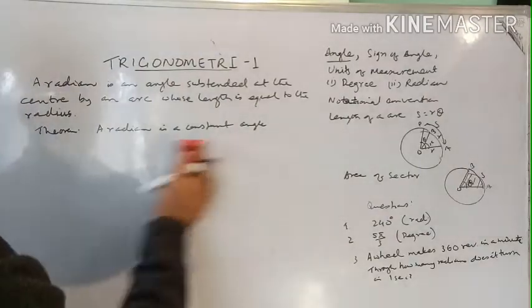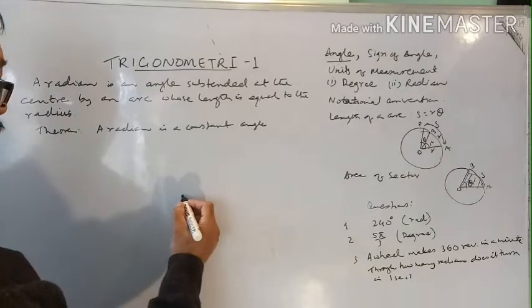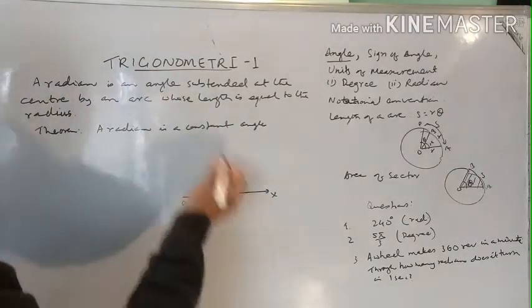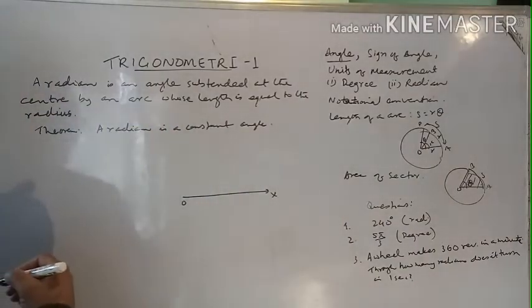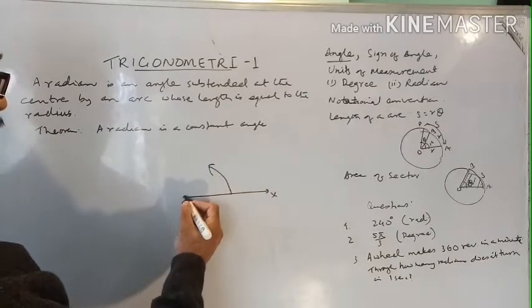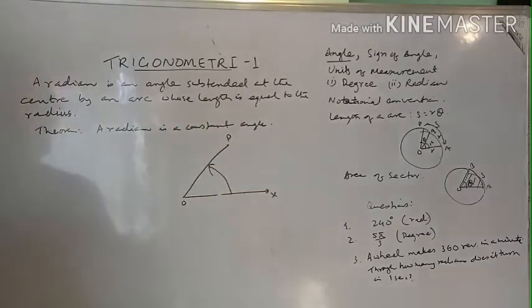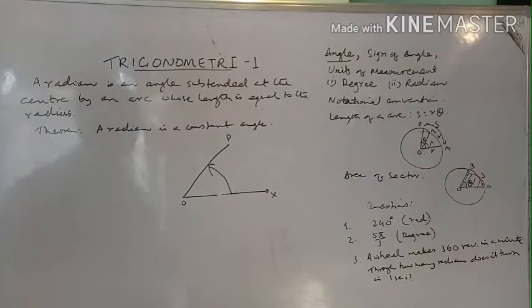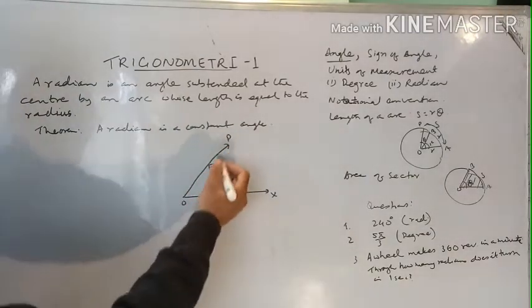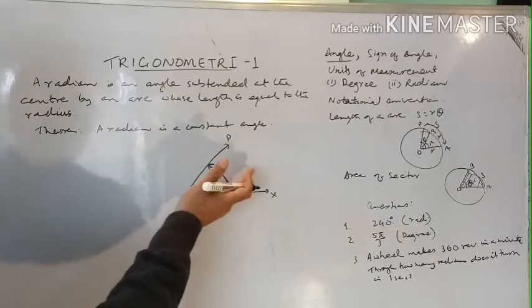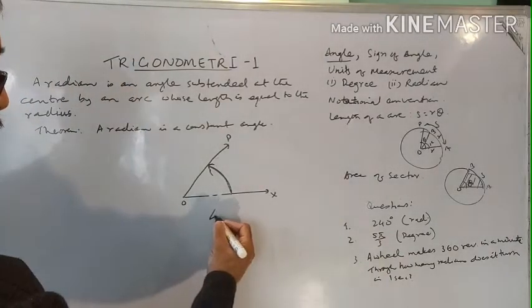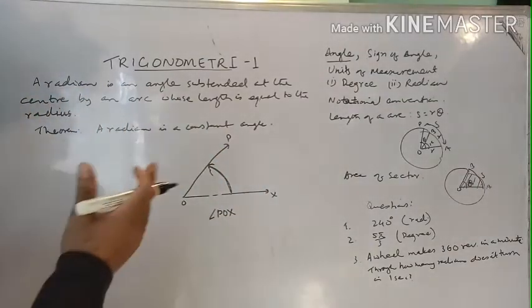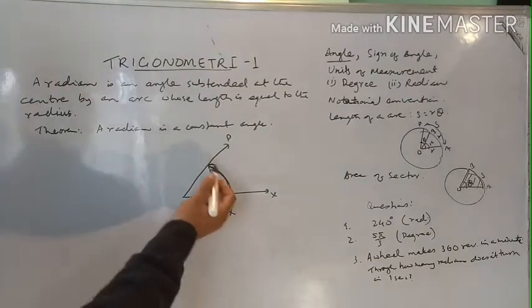In trigonometry, we change the concept of angle formation. We take a fixed point O and a revolving line OX. Suppose this line rotates either in anti-clockwise or clockwise direction. OX is the initial position of the rotating line and OP is the final position — the terminal position. The area traced by this line while revolving in anti-clockwise direction is called angle POX. So in trigonometry, the angle is formed by rotation of a revolving line.